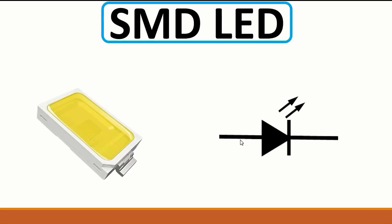Put the black probe into the cathode, or negative terminal. If you get a very low forward voltage drop, the diode is bad. You should normally get about 200, 300, 400, or 700 millivolts drop voltage.